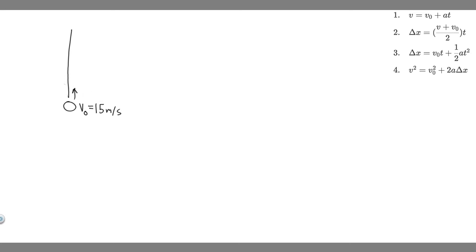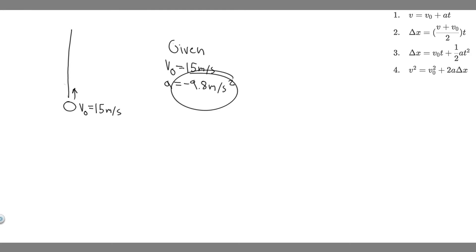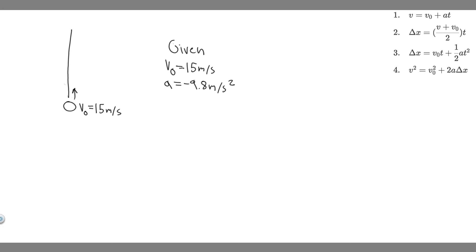Now let's write down our givens. The initial velocity is 15 meters per second. This type of problem is called a free-fall problem. Any problem where you throw something straight up, you assume the acceleration is minus 9.8 meters per second squared — that's the acceleration due to gravity. It's negative because it acts downward, opposite to the ball's upward motion.